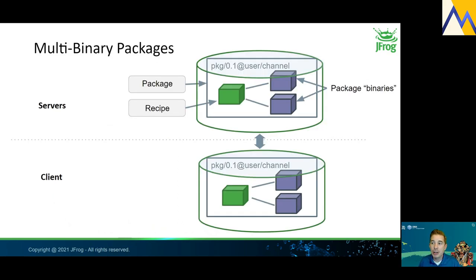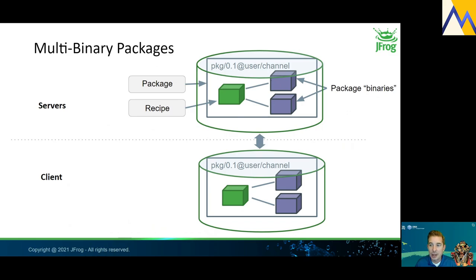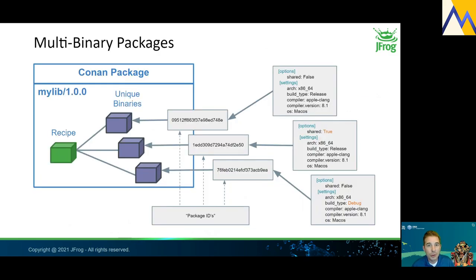While Conan is similar to other package managers in its high-level architecture, it's also very unique in its package model. The string shown here — pkg 0.1 at user/channel — is an example of what we call a recipe reference. This is the most simple and logical identifier for a package in Conan. One unique thing about this recipe reference is that it can represent any number of separate physical binaries with unique build configurations. Conan assigns a unique package ID for each unique configuration, and that package ID is used as part of the directory structure for storing Conan packages.